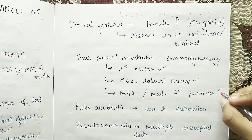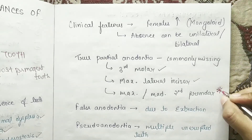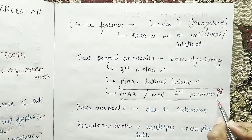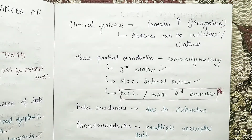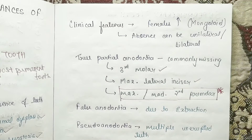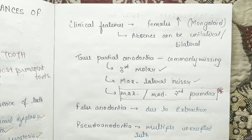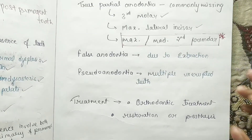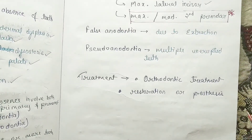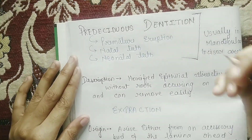The order of commonly missing teeth: first is third molar, second is maxillary lateral incisor, and third is maxillary or mandibular second premolar. This is very important because questions from this data appear in NEET/MDS exams. For treatment, you can do orthodontic treatment, restoration, and prosthesis.